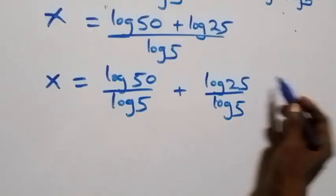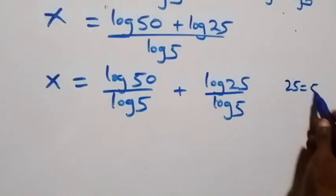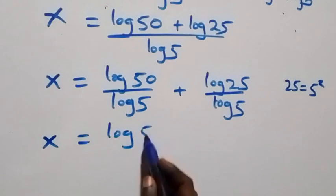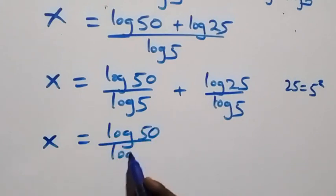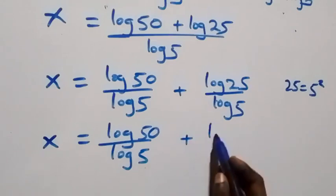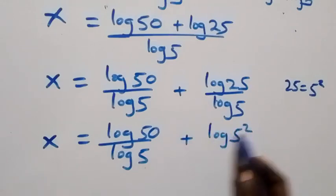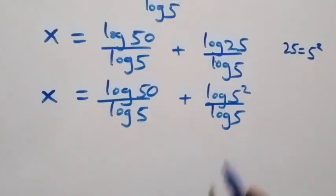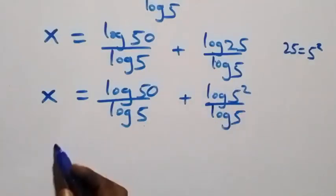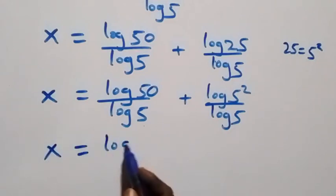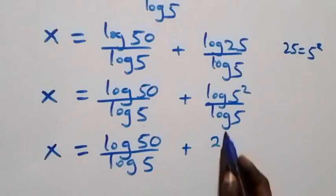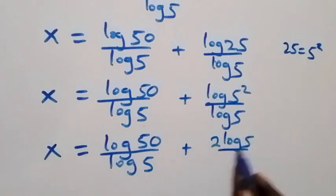We can express 25 as 5 times 5, which is 5 squared. Then we have x equals to log 50 over log 5, plus log 5 squared over log 5. We apply the power log rule and we have x equals to log 50 over log 5, plus 2 log 5 over log 5.